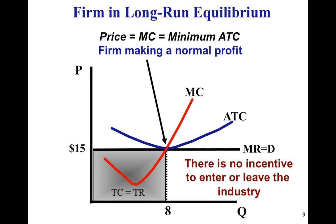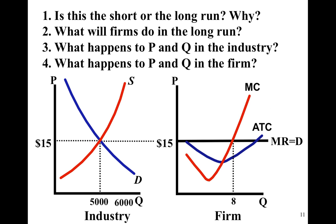Total cost and total revenue are the same. Pause and answer the questions. You should have identified the firm as being in the short run, because you can see there are profits — and profits will go away in the long run. We'll show you graphically just what that means.